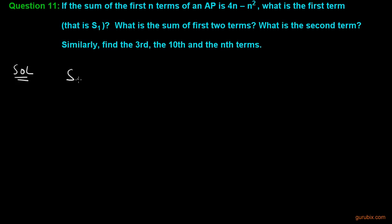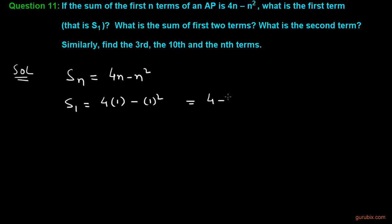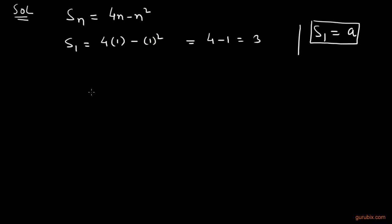We are given the sum of n terms: Sn = 4n - n². Let us find S1 by putting n = 1 in this formula. So S1 = 4×1 - 1² = 4 - 1 = 3. We know that S1 equals A, the first term of the AP. So the first term A = 3.